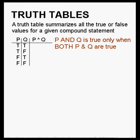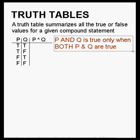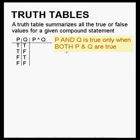Let's look at the truth table for the statement P and Q. Before we get started we have to realize that an AND statement is only true when both parts are true. So P and Q is true only when both P and Q are true. We need to know this to do the table.